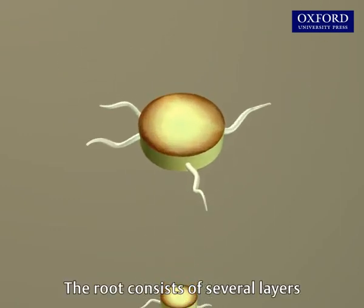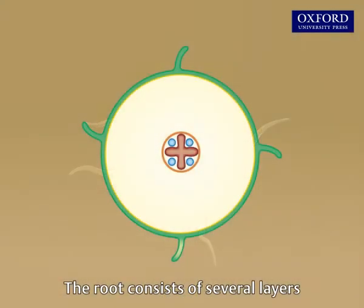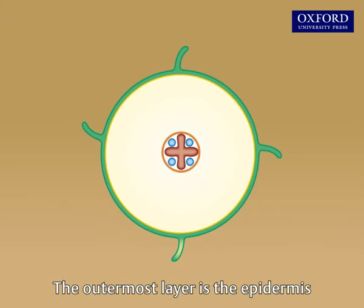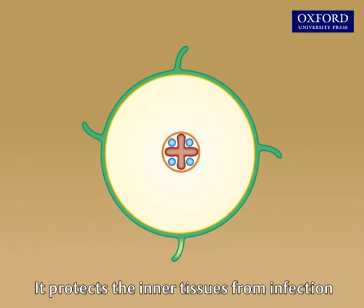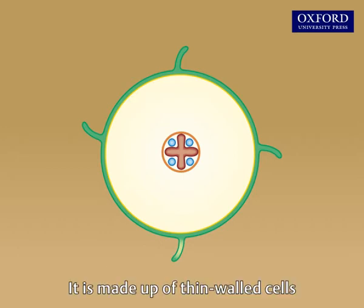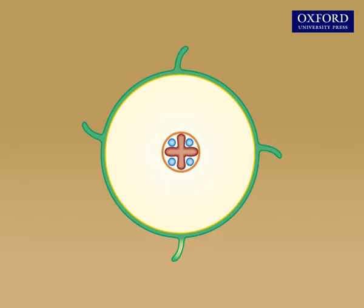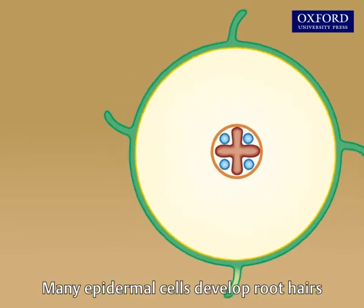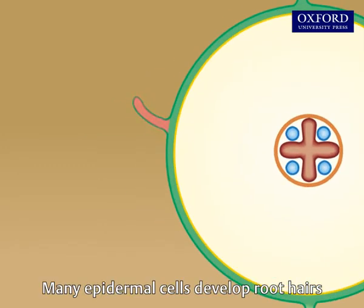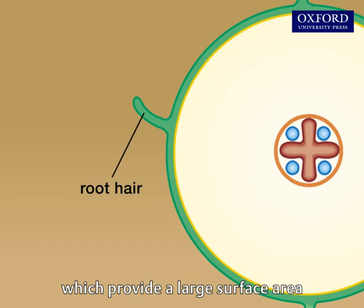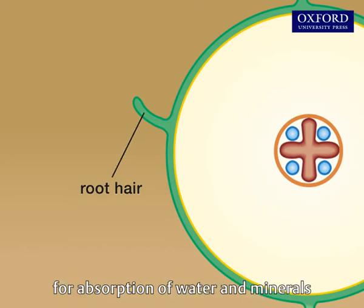The root consists of several layers. The outermost layer is the epidermis. It protects the inner tissues from infection and is made up of thin-walled cells. Many epidermal cells develop root hairs, which provide a large surface area for absorption of water and minerals.